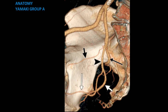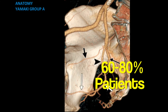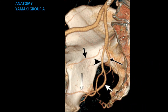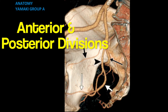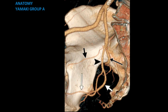The classic branching pattern is seen in about 60 to 80 percent of male patients. It is really defined by an anterior division and a posterior division. The anterior division is part of a common trunk, and the posterior division is formed by the superior gluteal artery.